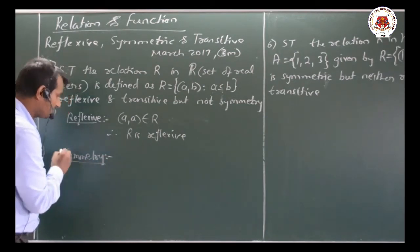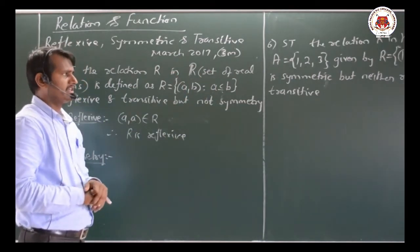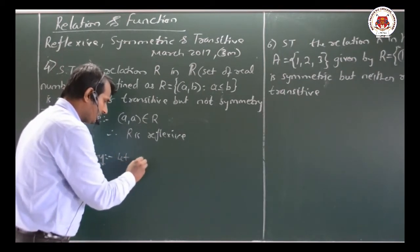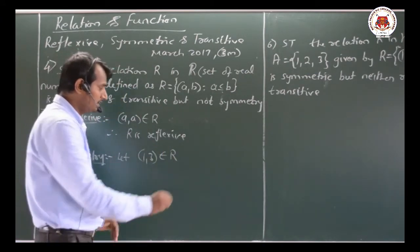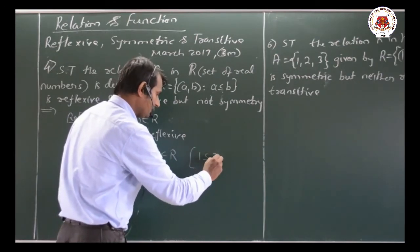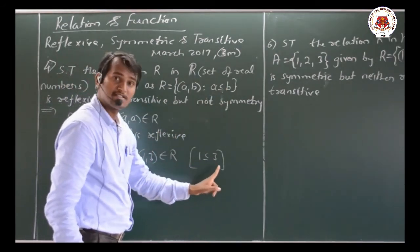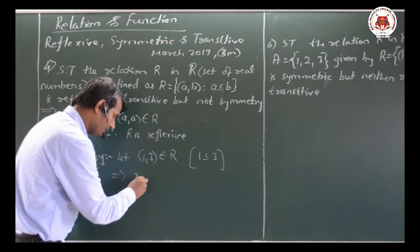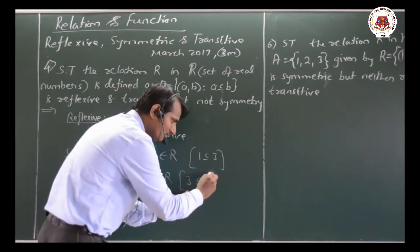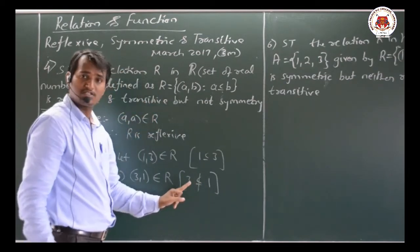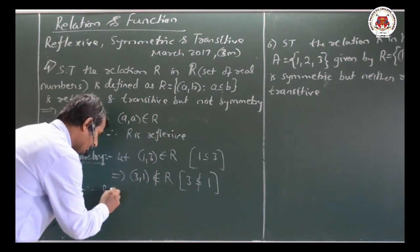Now we have to show it is not symmetric. Take (1, 3): 1 ≤ 3 is true, so (1,3) belongs to R. But does (3,1) belong to R? We need 3 ≤ 1, which is false since 3 is greater than 1. Therefore (3,1) does not belong to R. Hence R is not symmetric.